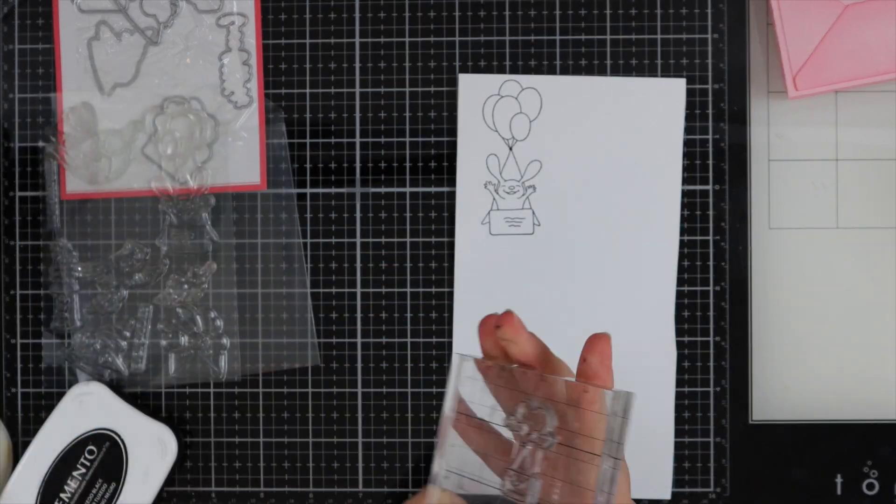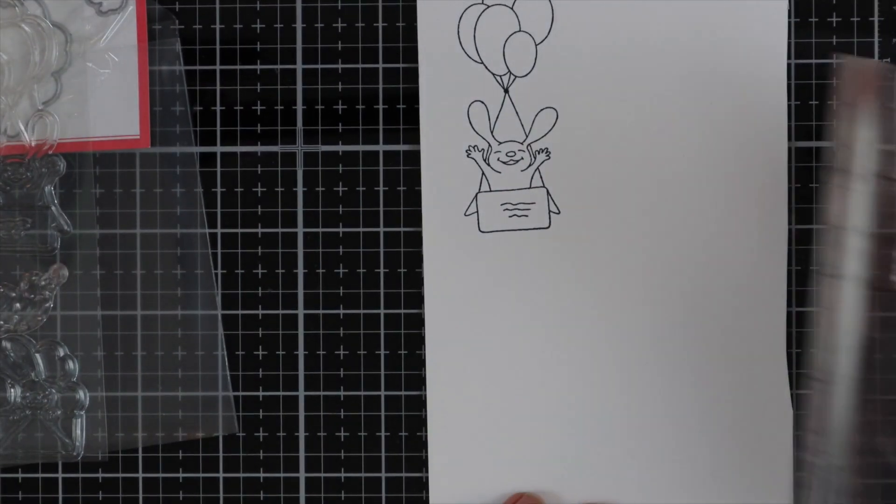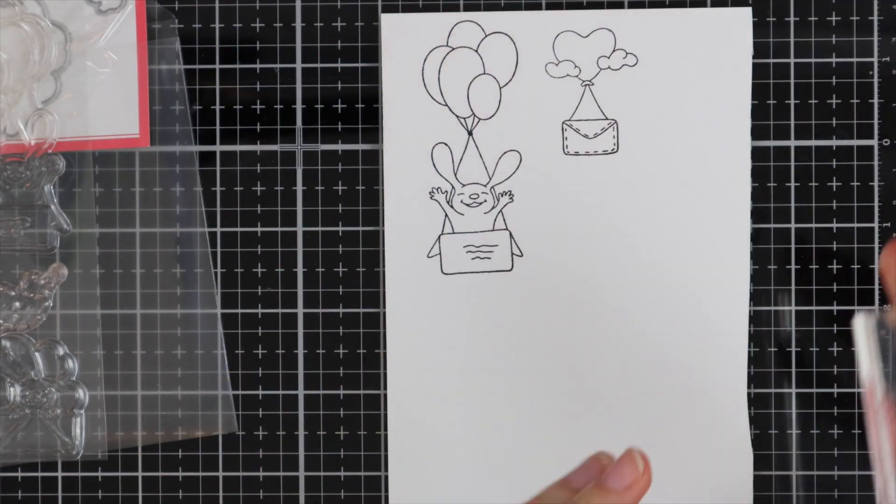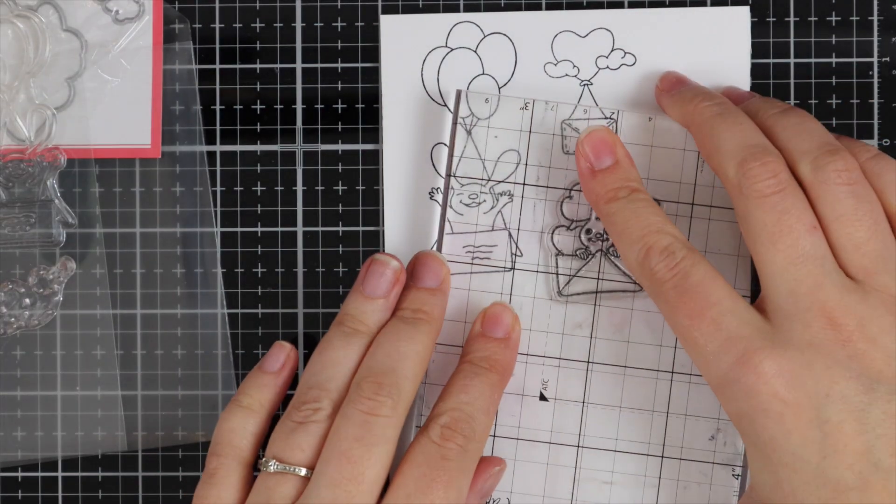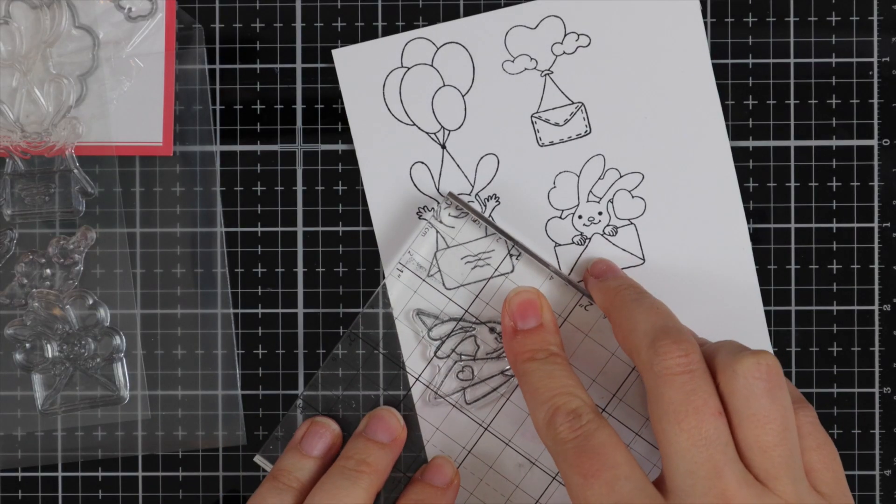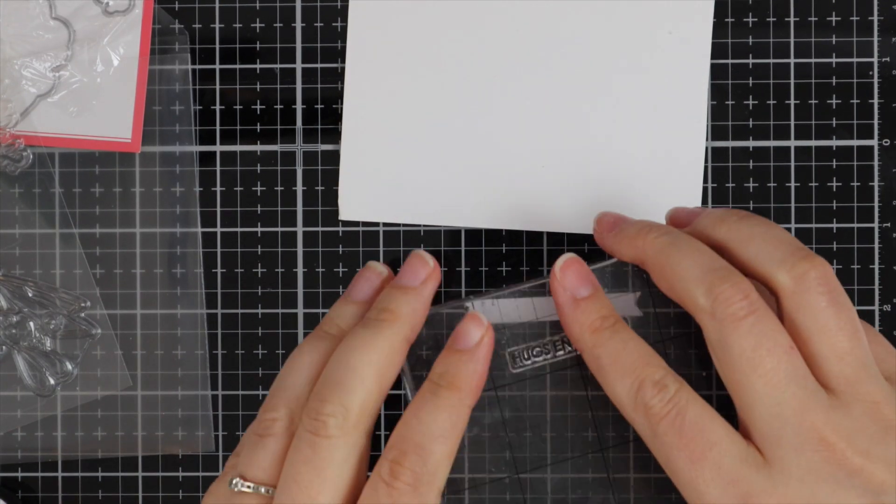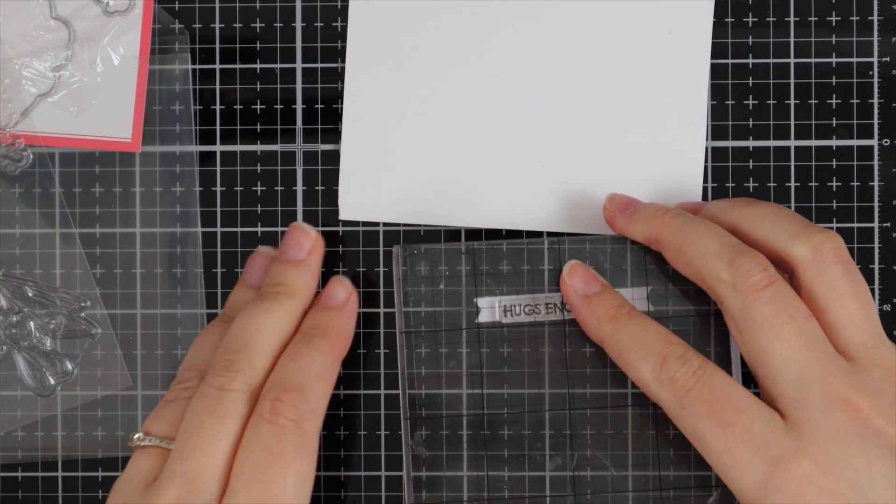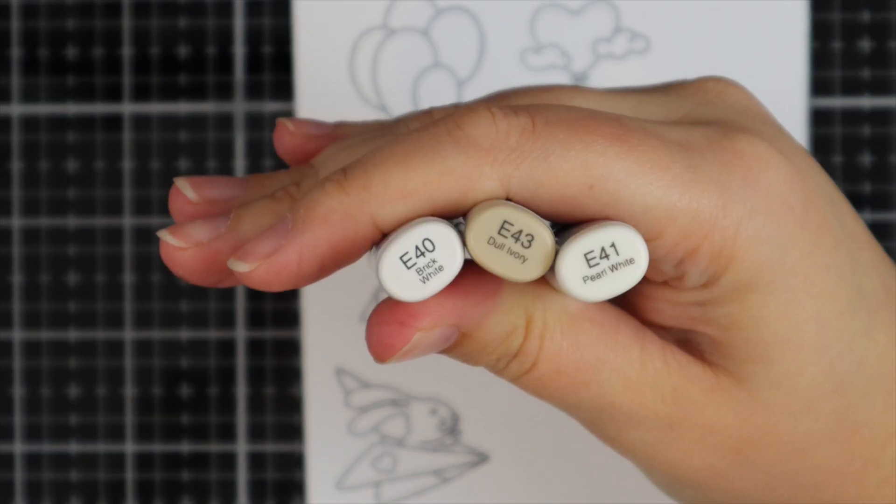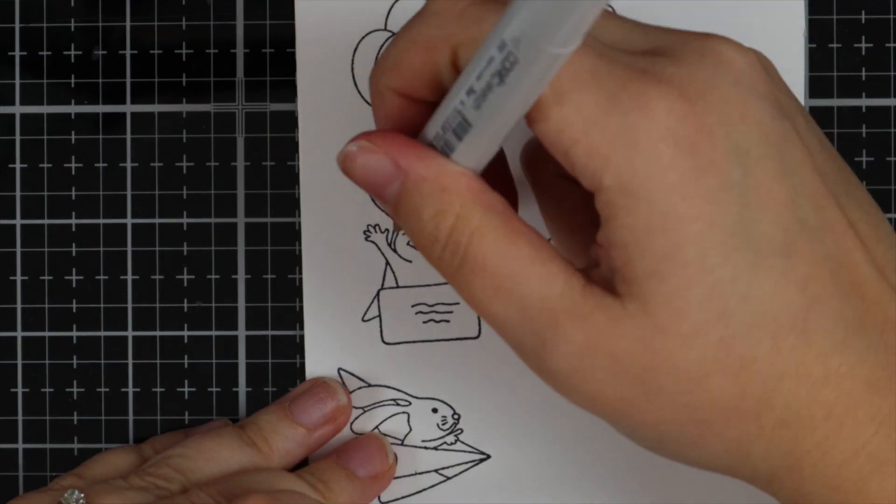So I've got my Copic-friendly card and also some black Memento ink. And I've actually remembered my sentiment, so I'm going to go ahead and stamp this out that says 'hugs enclosed', which is included in the stamp set. And now I'm just going to quickly show you how I colored in these images with my Copic markers.